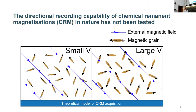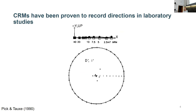In a simple case of CRM acquisition - a grain growth CRM - when our magnetic grains are very small, their magnetic moments are rotating randomly. Once they reach their blocking volume, a certain size, they no longer have the energy to rotate, and the energy barriers associated with being aligned close to the field are going to be less than against the field. Therefore, we'd expect more grains to be aligned closer to the field in their final state, meaning that when we have a bias field like the Earth's, a CRM should record that direction.